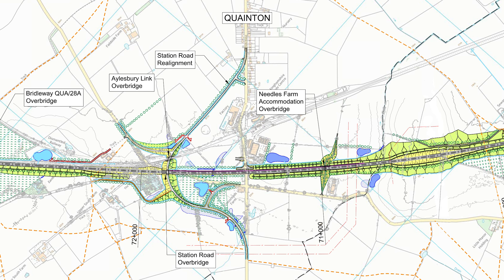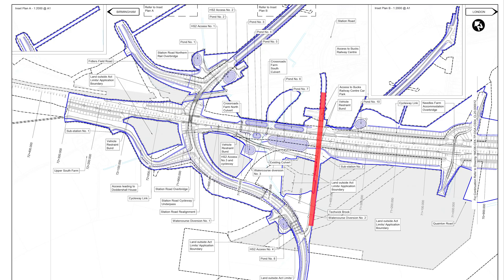We'll now take a closer look at the Station Road realignment and those two bridges. It's probably a good idea to pause here and have a look at all the information shown on this plan. The red line shows the old route of Station Road, which will be chopped in two and stopped up because of the railway going through it.